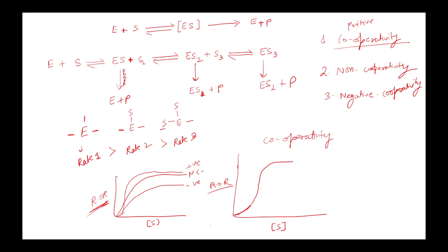A classic example of positive cooperativity is hemoglobin: binding of one oxygen molecule increases hemoglobin's affinity towards the next oxygen, producing a sigmoid curve. In contrast, myoglobin also binds oxygen but shows non-cooperativity, following a normal hyperbolic curve.